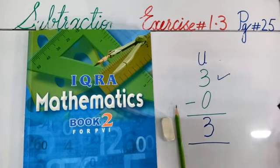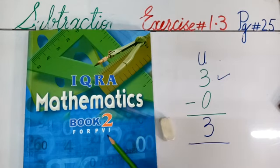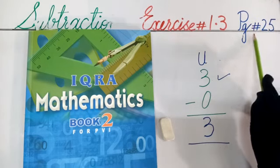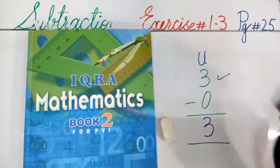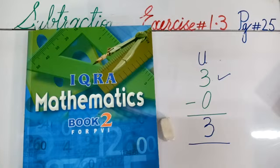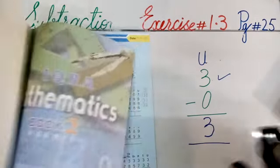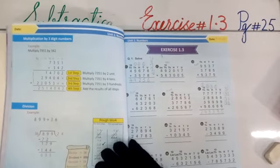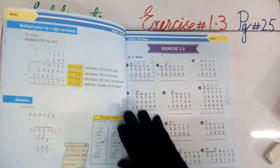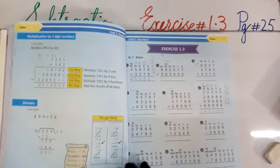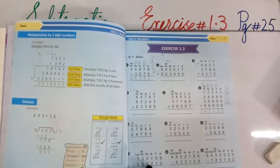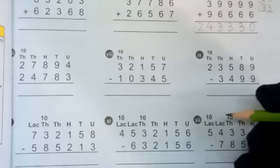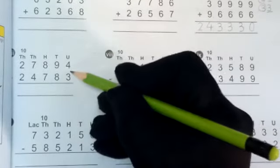Now, come to the IQRA Mathematics Book 2, Exercise 1.3, and open the page number is 25. Today, we have to do page number 25. We will start part number 7. So, let's start from part number 7.